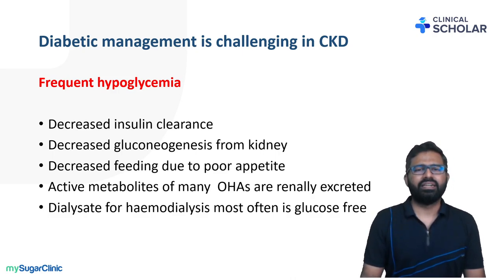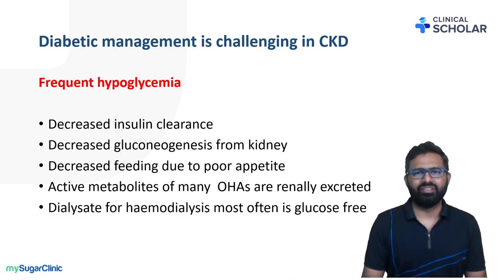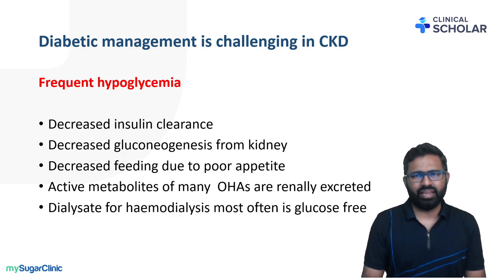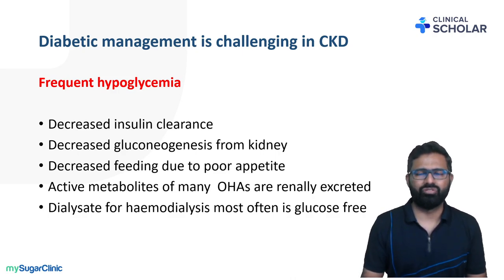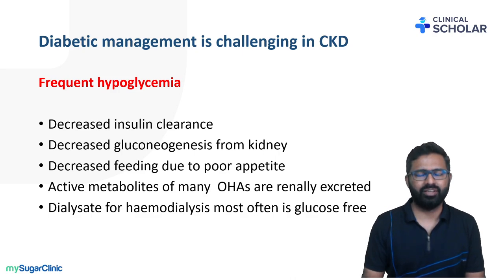Secondly, there is decreased gluconeogenesis in the kidney. Of the total gluconeogenesis, two-thirds is from the liver and one-third is from the kidney. This one-third contribution from the kidney is not adequate in patients with advanced CKD. Thirdly, patients with CKD have uremia because of accumulation of waste products that are normally excreted through the kidney. Many uremic toxins can suppress the appetite, and so CKD patients may not be taking adequate food at many instances.